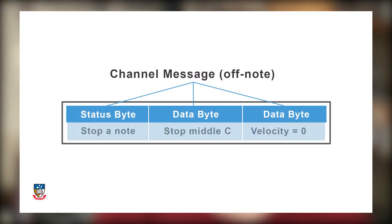In the case where the electronic instrument being played doesn't have a natural decay, such as an organ or a bowed string instrument, it's important that a note-off message is sent to the instrument to ensure it stops playing. If we didn't do this, we might end up with a note that plays forever, otherwise known as a stuck note.